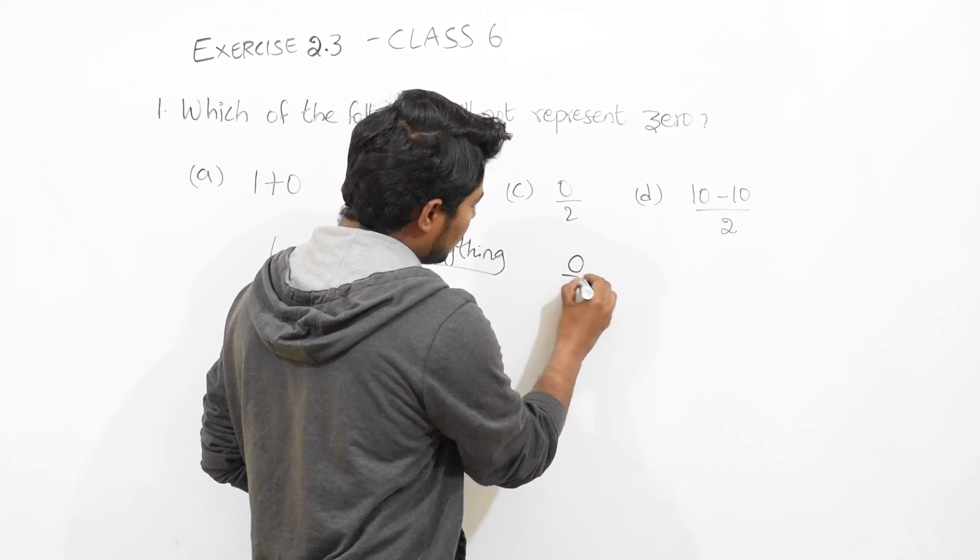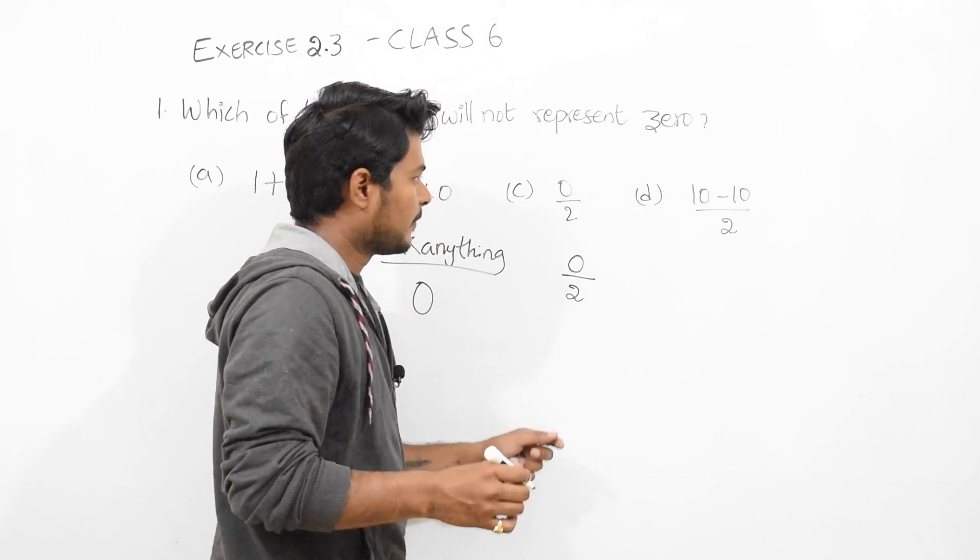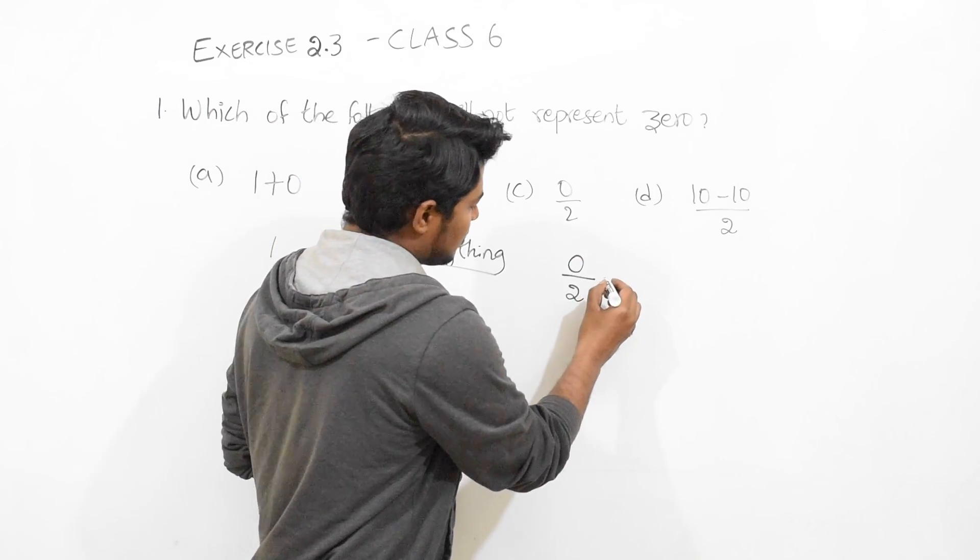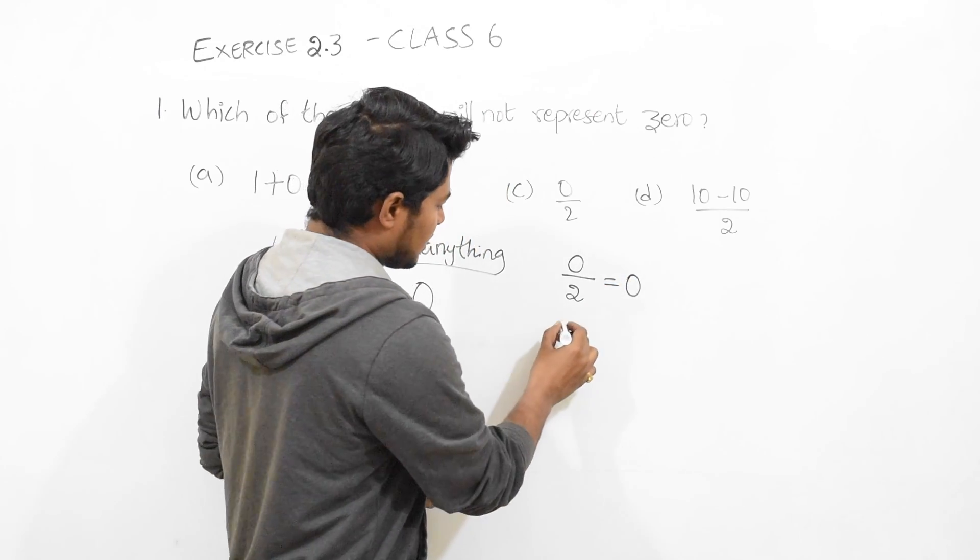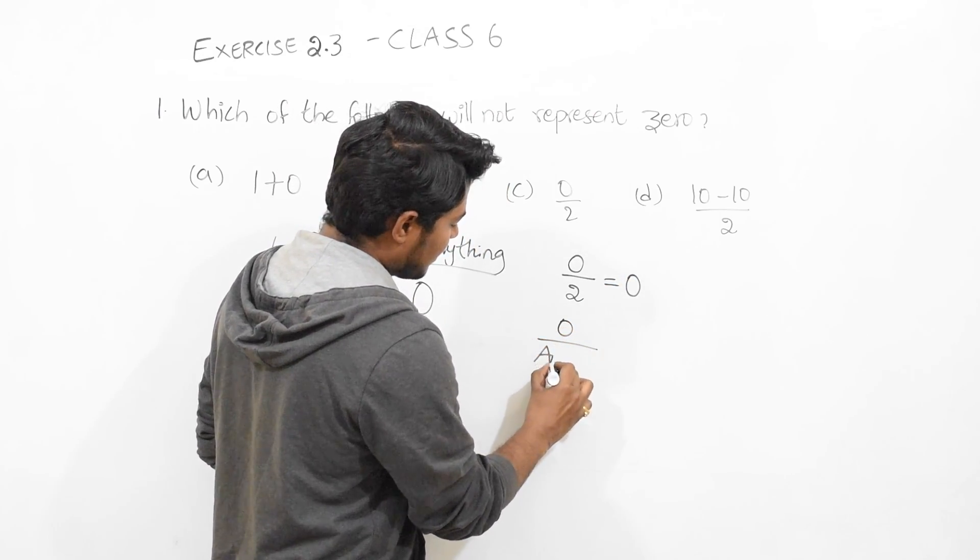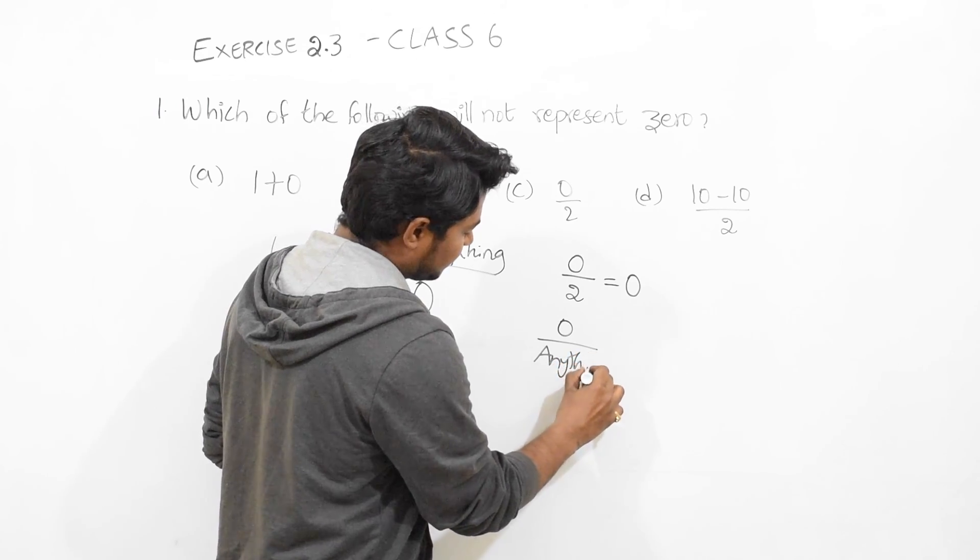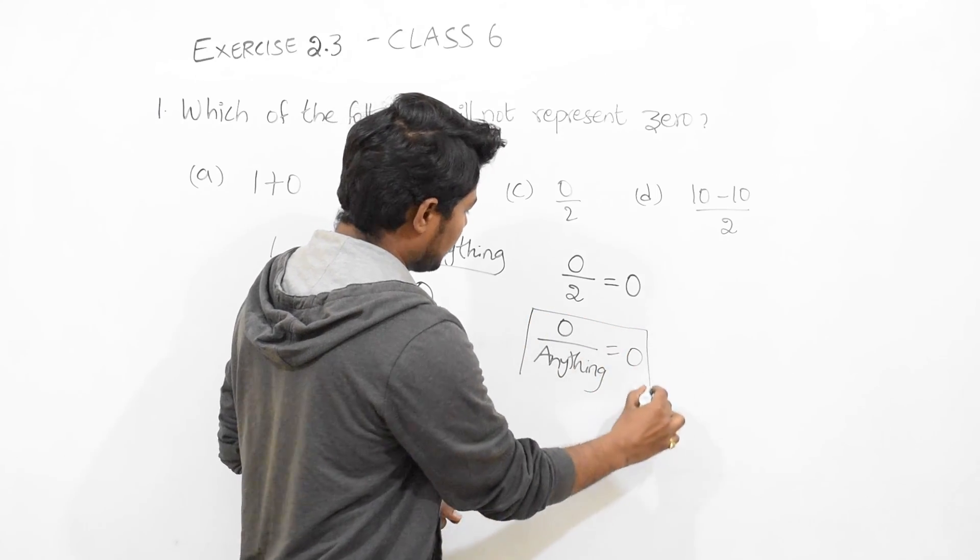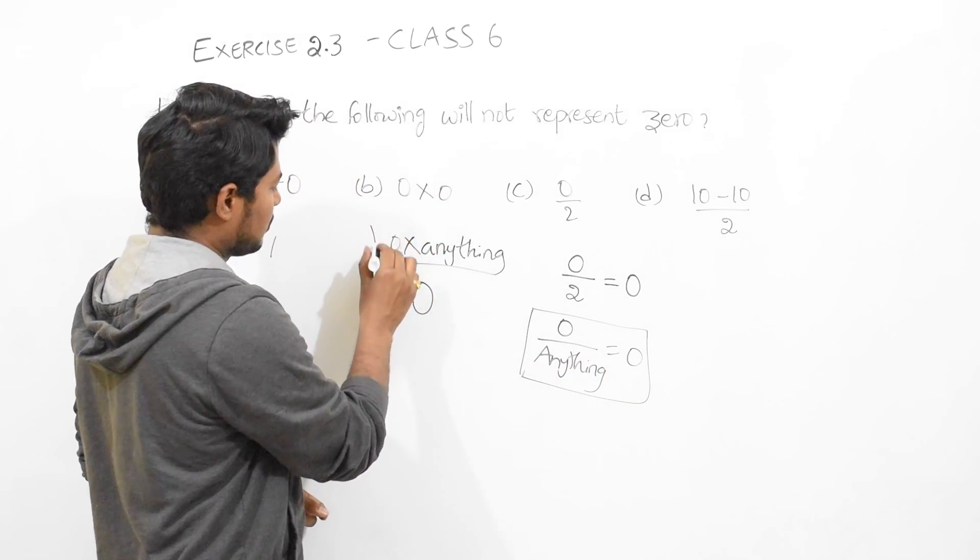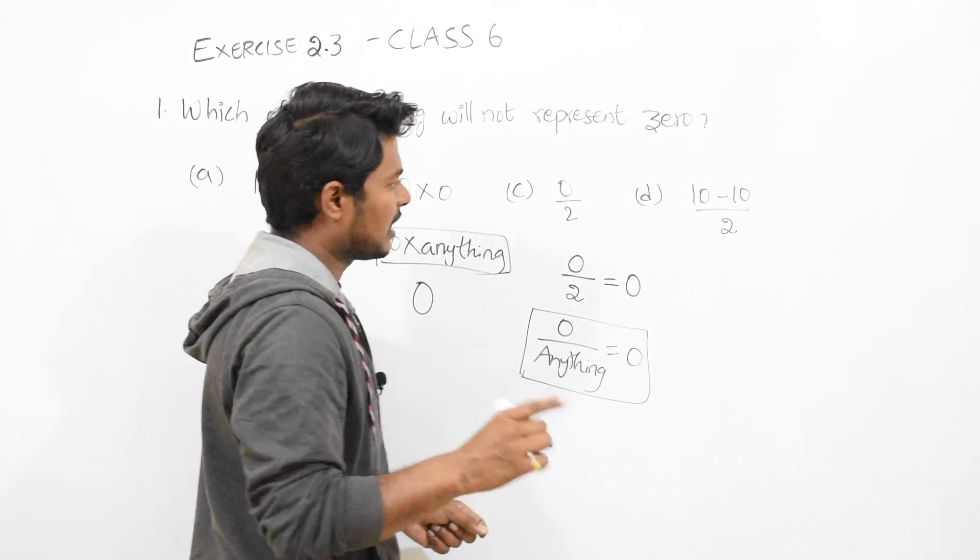Next, here is 0 divided by 2. 0 divided by 2 is also equal to 0. Which means 0 divided by anything is also equal to 0. This also you should remember.